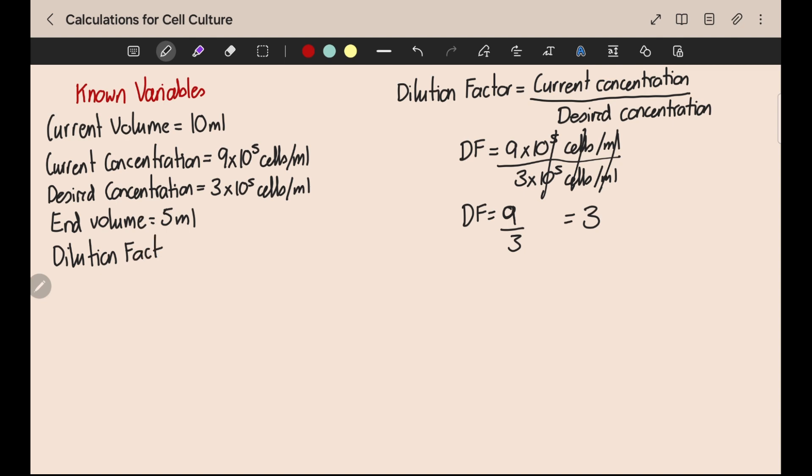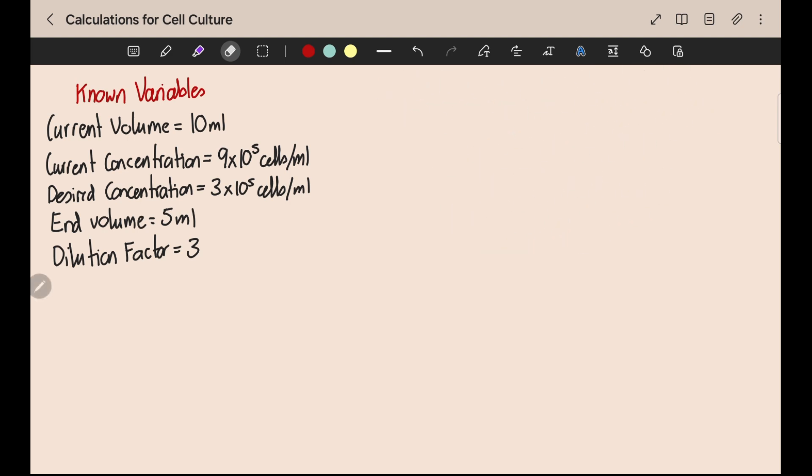That means we have to dilute our cells by a factor of 3 to get them to the desired concentration. You could dilute all of the cells you currently have, which is 10 mils worth.